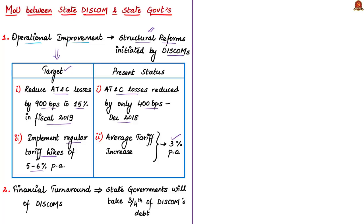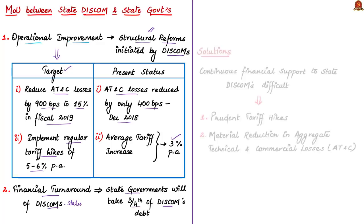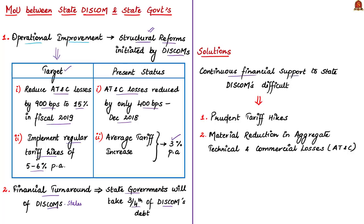Coming to the second objective of the UDAY scheme — financial turnaround — this refers to improving the financial health of state Discom companies burdened with huge debts. Under UDAY, respective state governments agreed to finance three-fourths of the Discoms' debt. CRISIL observed that with most states having limited budgets, continuous financial support to their Discoms may be difficult. Therefore, Discoms have to become commercially viable through prudent tariff hikes year-on-year and a material reduction in AT&C losses. The Senior Director of CRISIL noted that the focus on new rural connections without adequate tariff hikes can increase losses.